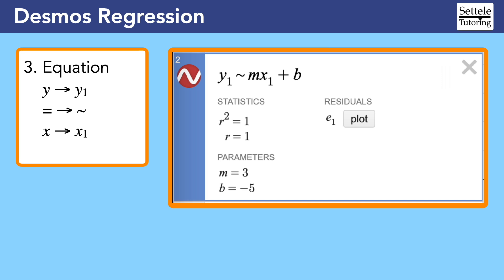You can ignore the statistics and residuals portions. The r values tell us how accurately the regression fits the points in the table. In pretty much every case on the SAT, the r values should be equal to one.